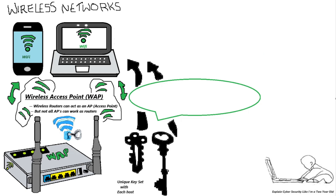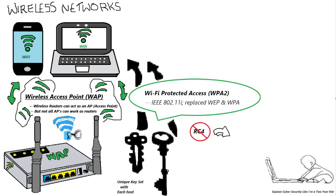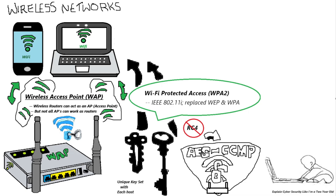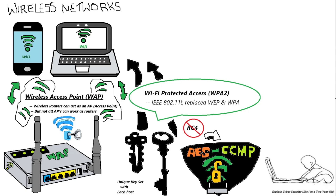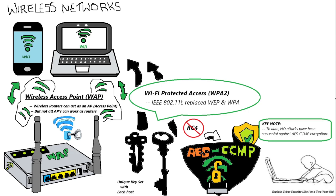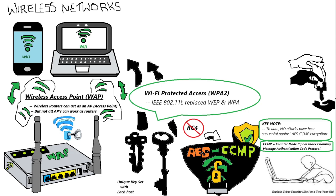Moving on to Wi-Fi Protected Access WPA2, which was the official replacement for WEP and WPA as per the IEEE 802.11i standard. The most important takeaway is that it implemented AES-CCMP, which replaced the RC4 encryption cipher. AES-CCMP stands for Advanced Encryption Standard along with Counter Mode with Cipher Block Chaining Message Authentication Protocol. To date, there have been no successful attacks against AES-CCMP encryption, but there have been exploits of the WPA2 key exchange process.